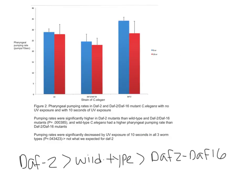The pharyngeal pumping rate analysis was useful for observing neuromuscular changes in response to stress. DAF2 mutants had significantly higher pharyngeal pumping rates than wild-type and DAF2-DAF16 C. elegans, both with no UV exposure and after UV exposure.